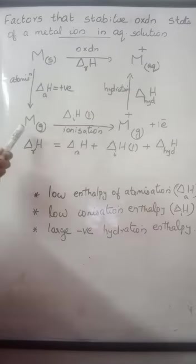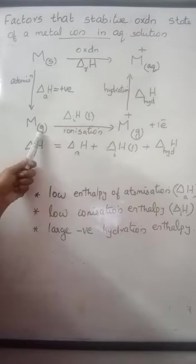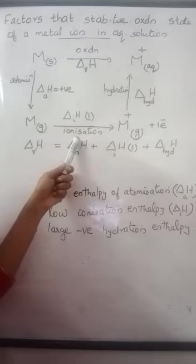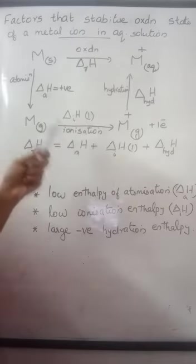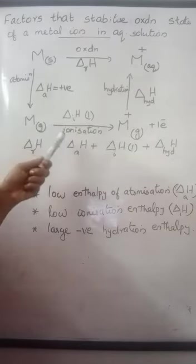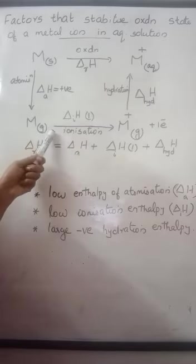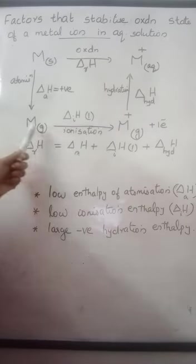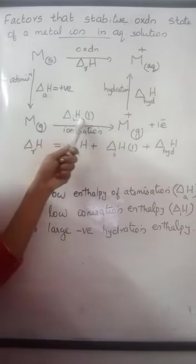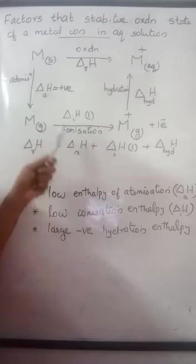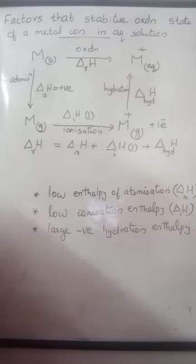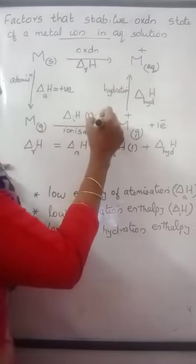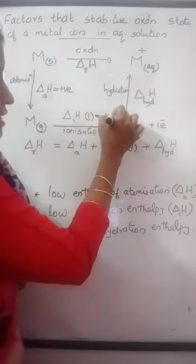Next, these metal atoms in the gaseous state should lose one electron. That process is called ionization. For ionization, energy should be given. The amount of energy required to remove the most loosely bound electron from an atom in the isolated gaseous state is called ionization enthalpy — first ionization enthalpy, delta H_A1. This process is also endothermic and positive.